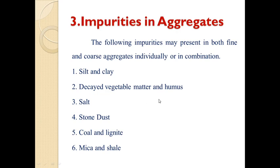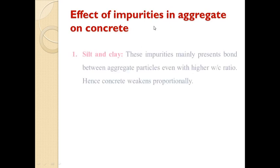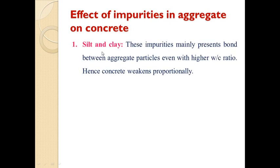Now let us see the effect of these impurities in the aggregate on concrete. First, silt and clay: these impurities prevent bonding between the aggregate particles even with a higher water-cement ratio, hence concrete weakens proportionally.